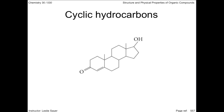In sunlight, ultraviolet light breaks open the hydrocarbon rings of cholesterol to ultimately form vitamin D, an essential vitamin that helps your body absorb calcium. Cholesterol is one of a class of hydrocarbons called cyclic hydrocarbons.